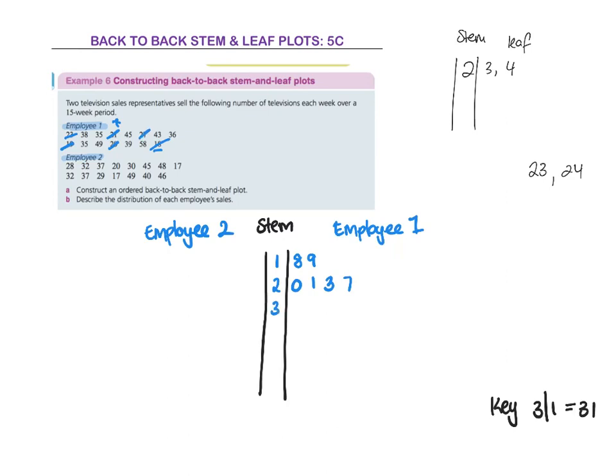Okay? And then I'm going to go to the 30s. What's the lowest 30s that you can see there? 35. And there's two of them. Then there's 36. So I'll put a 6 there. Then there's 38. Done. And also 39.